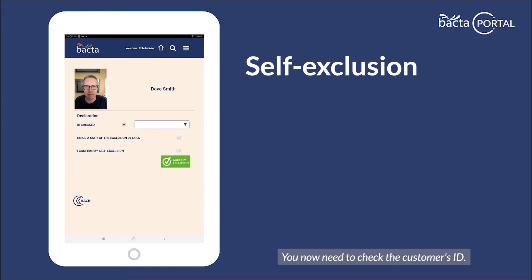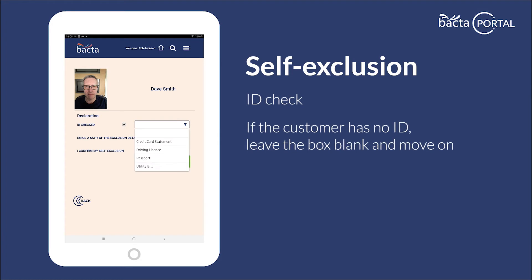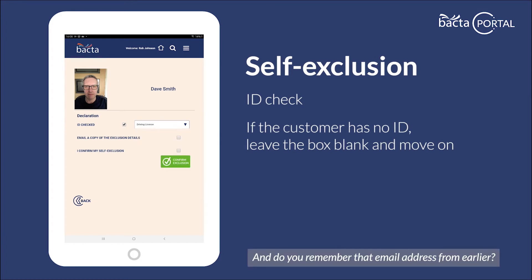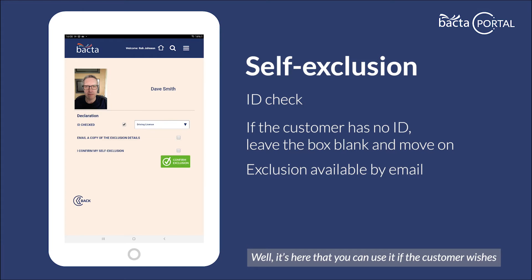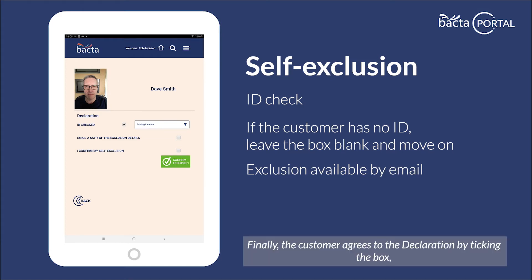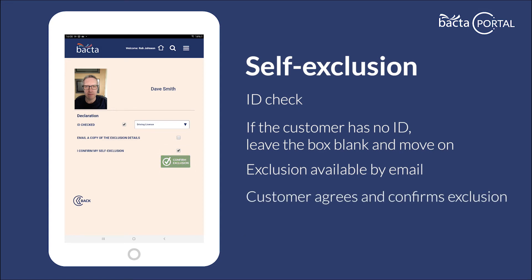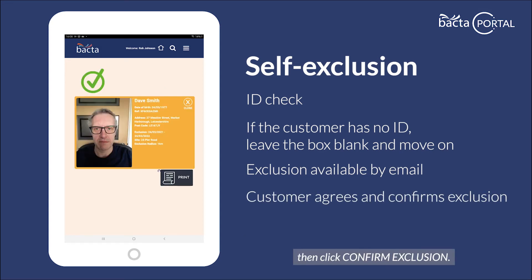You now need to check the customer's ID. And do you remember that email address from earlier? It's here that you can use it if the customer wishes to receive their own copy of the exclusion. Finally, the customer agrees to the declaration by ticking the box, then click confirm exclusion.